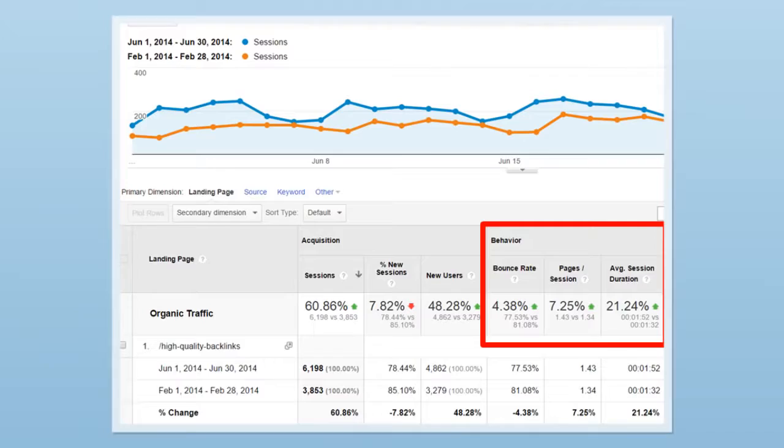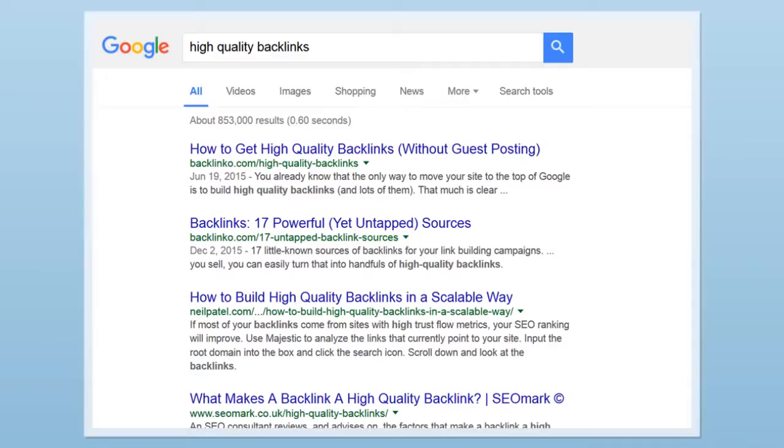Now in a minute, I'll show you how you can easily keep Google searchers on your site longer. But for now, I want to show you where things stand today. Today, my page ranks number one in Google for the keyword High Quality Backlinks. And for the keyword How to Get High, I'm nowhere to be found. That's the power of this new ranking factor.